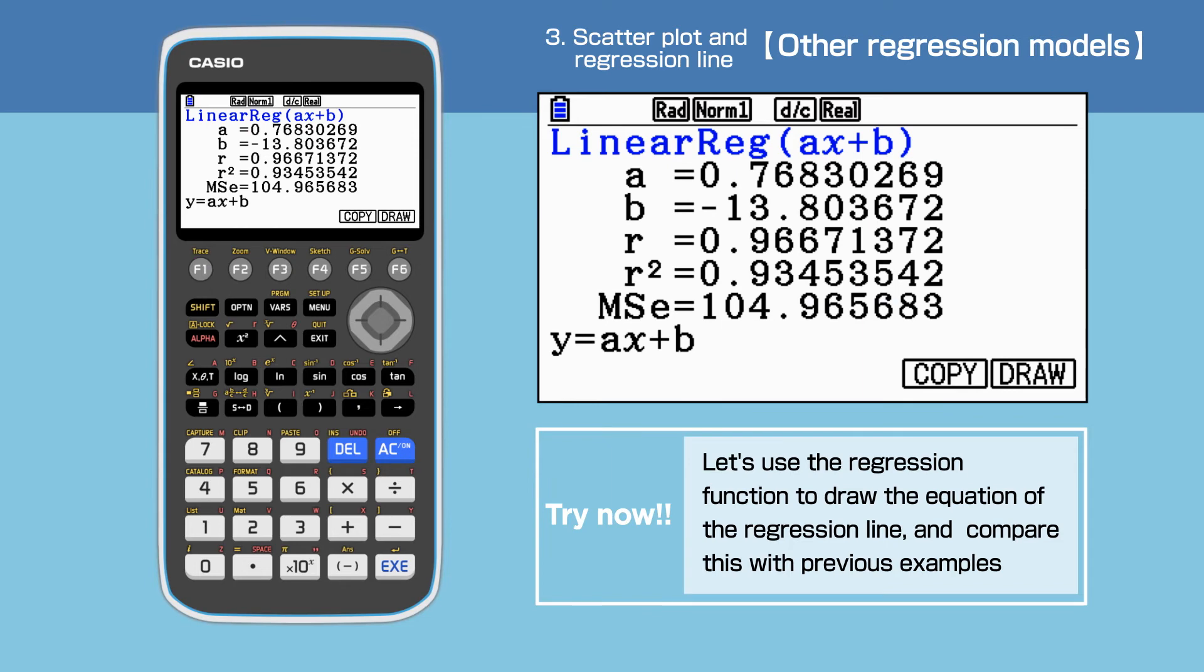The equation of the regression line is Y equals 0.768X minus 13.8. The correlation coefficient is 0.967, which shows a strong positive correlation.